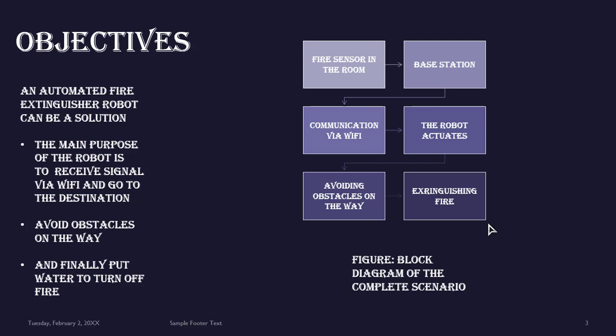We followed certain steps to solve our goal. First, the sensor detects fire and sends signal to the base station. Then, base station sends signal to our robot via Wi-Fi module. After receiving the signal, the robot actuates, avoids obstacles and goes to the desired position. Now, my partner, Fahim Muntasir will continue from here.